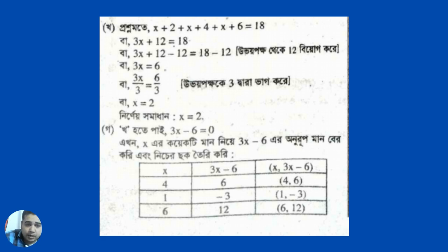So, now 3x plus 12 minus 12 equals 18 minus 12. So, now 3x plus 3 equals 6 divided by 3.